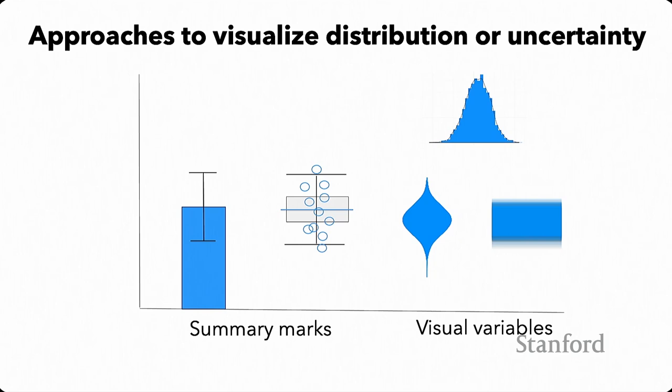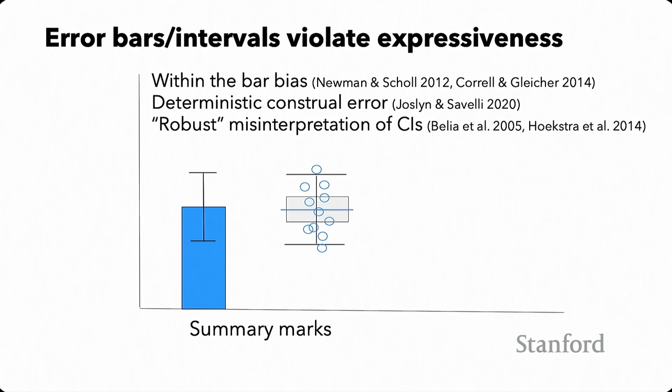Most of these techniques are static and use either summary marks — things like error bars or box plots to present statistical constructs, properties of a distribution — or they use visual variables like color, position, height in a density plot, or opacity to show probability. The problem with most of these techniques is that when we apply canonical criteria for evaluating visualizations, we see some major issues with these approaches.